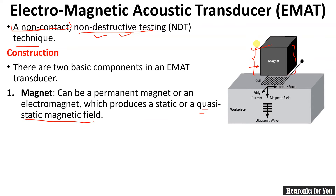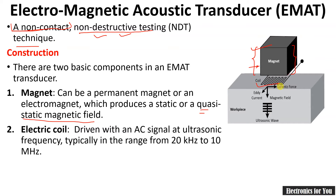The second part of the EMAT is the electric coil. An AC supply of high frequencies is applied to this coil. The typical range for the high-frequency AC is 20 kilohertz to 10 megahertz.